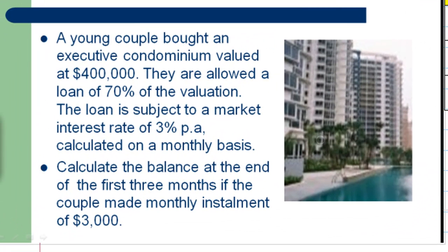A young couple bought an executive condominium valued at $400,000. They are allowed a loan of 70% of the valuation. The loan is subject to a market interest rate of 3% per annum calculated on a monthly basis. Our problem is to calculate the balance at the end of the first three months if the couple make a monthly installment of $3,000.